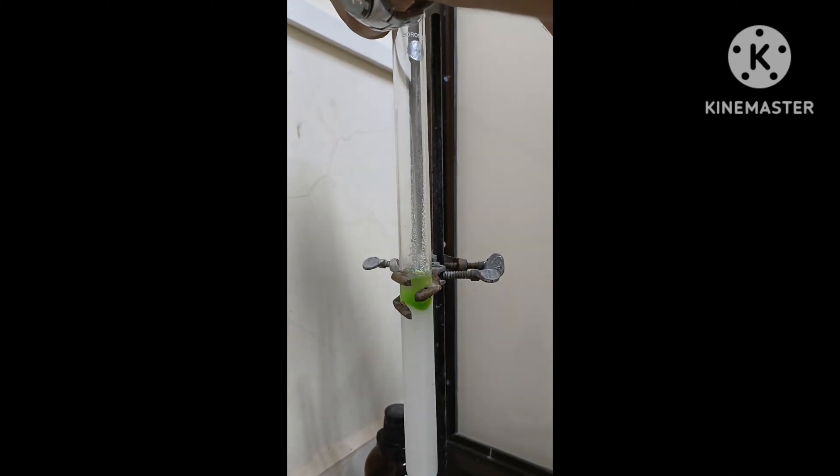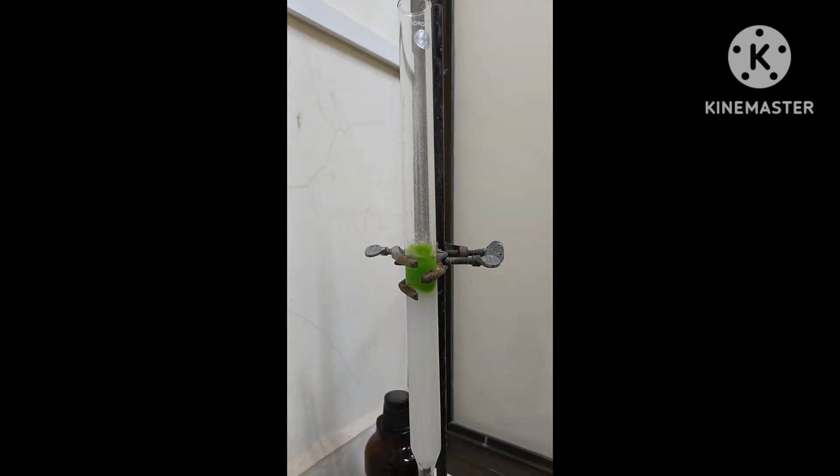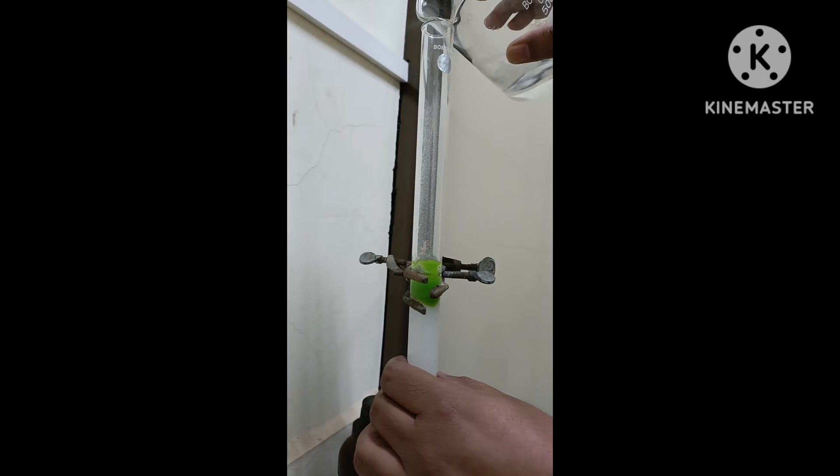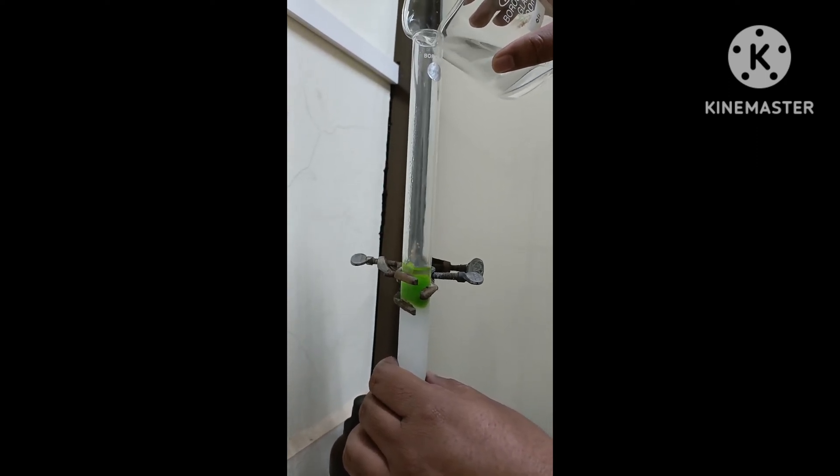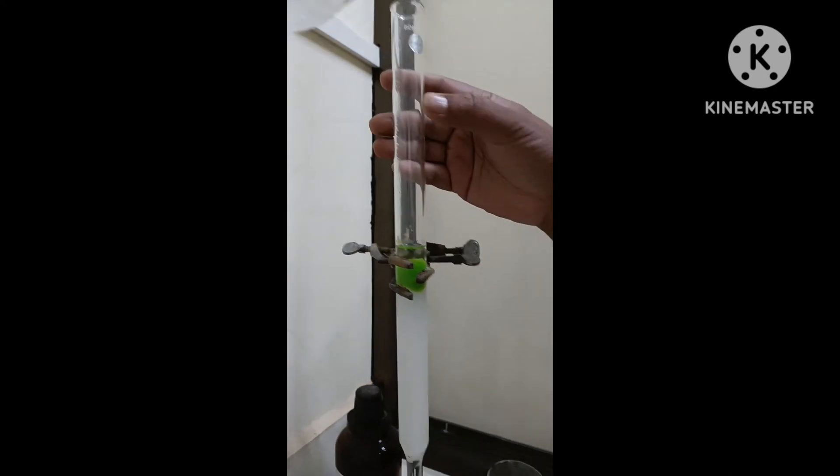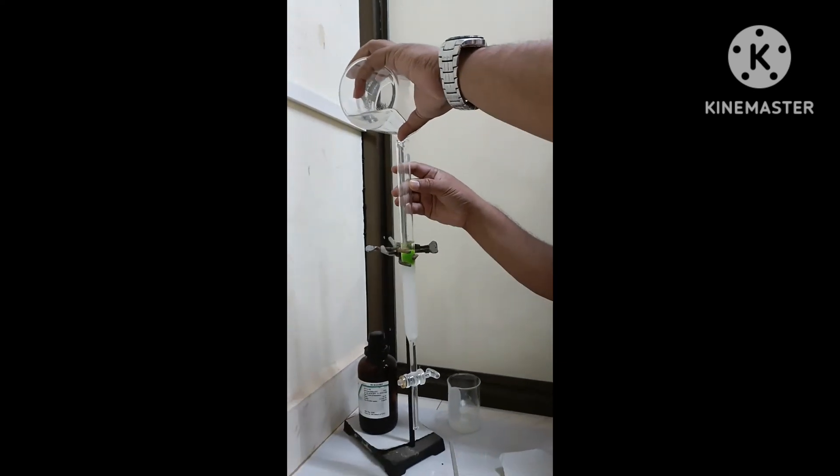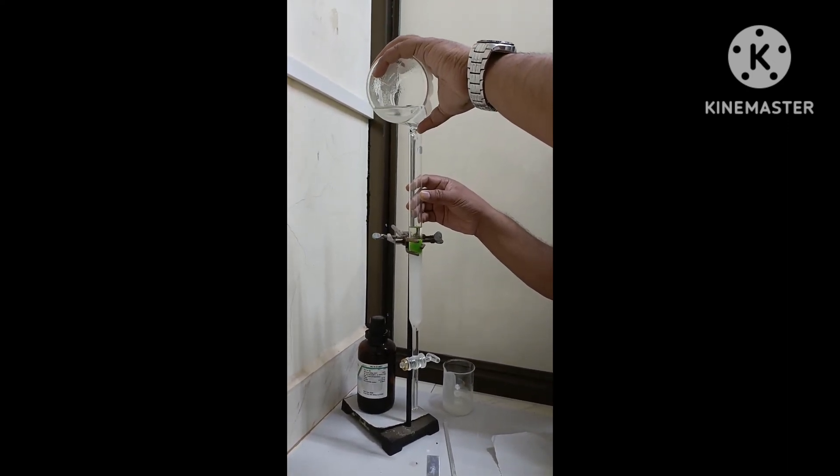This adsorbed sample, we are going to load in the packed column. Because we have adsorbed, you can see it is going smoothly and not disturbing the column packing. Very gently, we have to add the solvent that is n-hexane here.